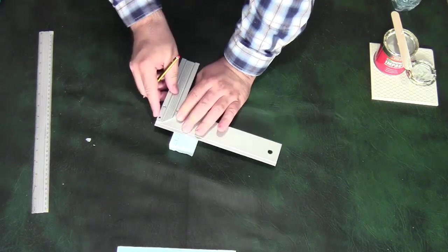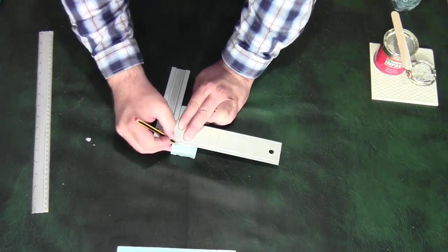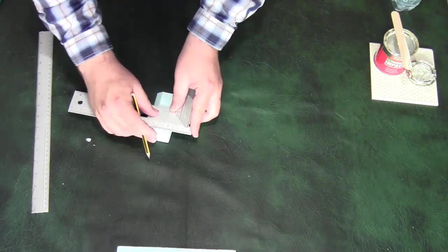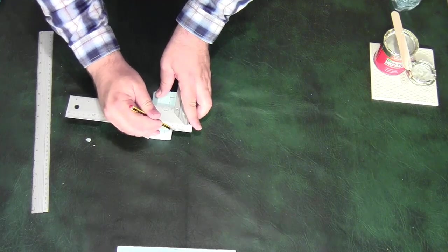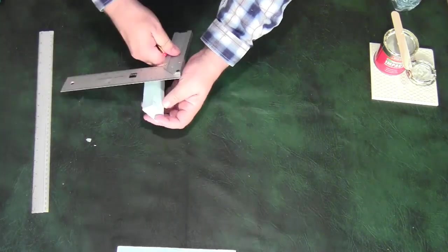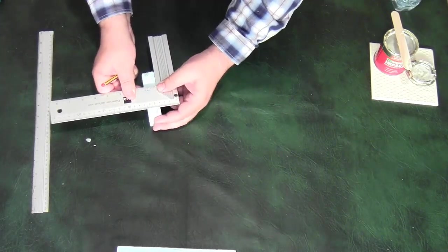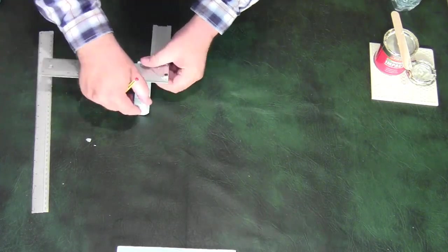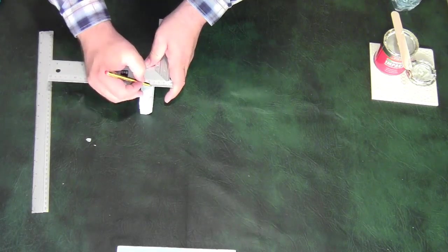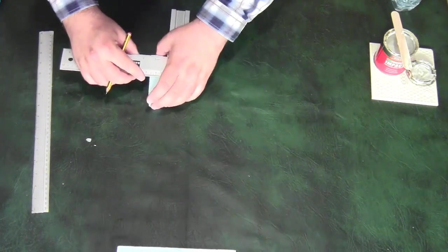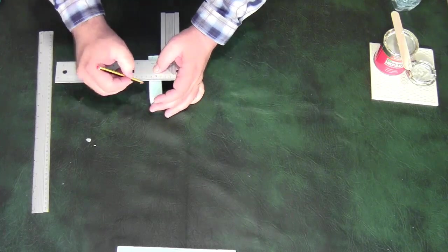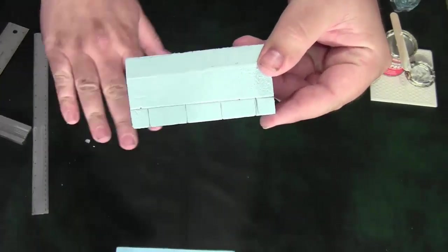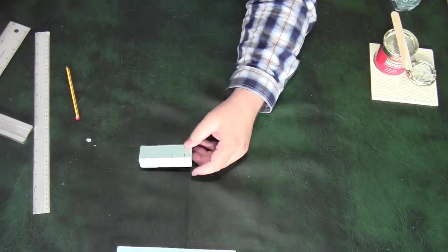I then use the square to make sure my lines are at a right angle to the edge of the material. The square also enables me to make sure that the lines across the top are also square. And there you can see up close the markings.